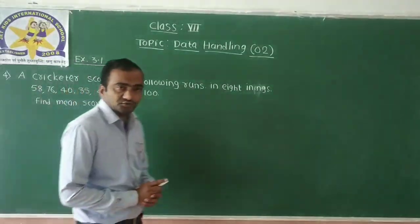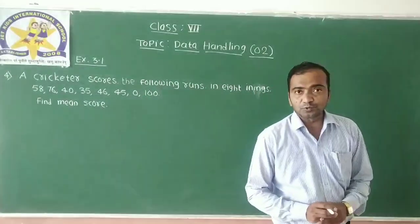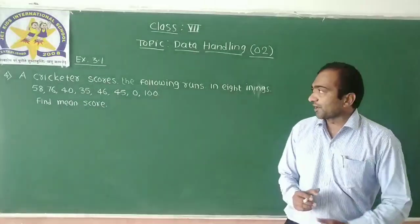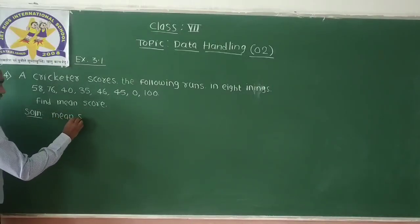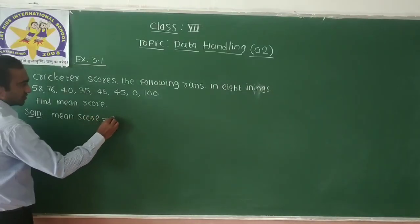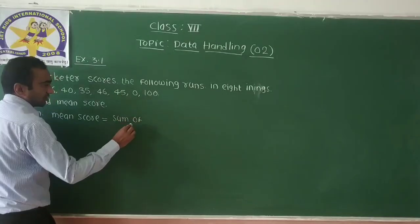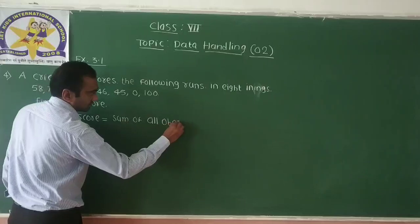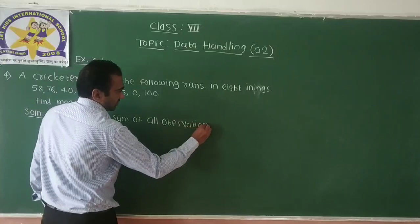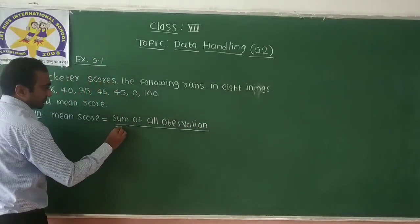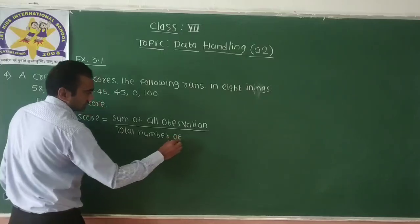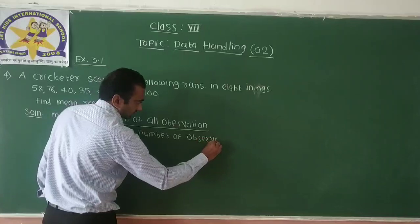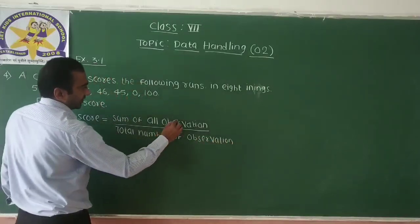To find the mean score, the total number of observations is 8. First we write the formula: mean (A) equals the sum of all observations divided by the total number of observations.